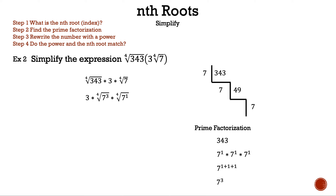Now let's rearrange 343 and put the roots closer together. So we have three times the fourth root of seven cubed times the fourth root of seven to the first. Using properties of roots, we can combine them since both have the same index, and adding the exponents gives three plus one equals four. We can cancel the power and the index since both are the same, and only the seven remains. So three times seven is 21. That is example two.